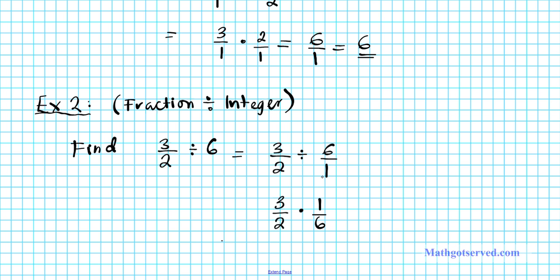The whole idea here is that when you are dividing, what you are doing in essence is multiplying by the reciprocal of the denominator. Now multiply across: 3 times 1 is 3, and 2 times 6 is 12. We can reduce this fraction by dividing the numerator and the denominator by the greatest common factor. The greatest common factor of 3 and 12 is 3, so dividing gives us 1 over 4. There goes your answer.